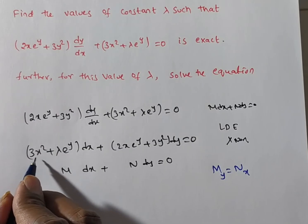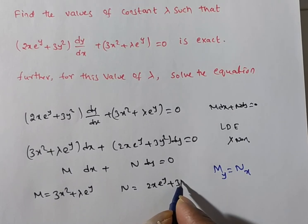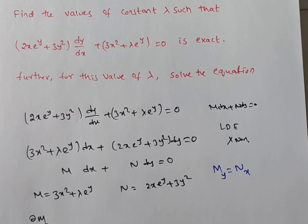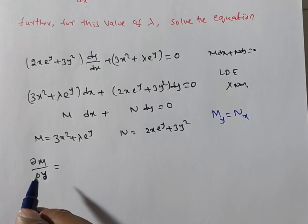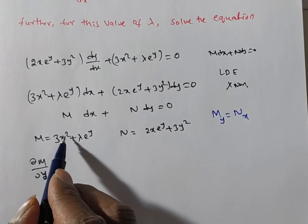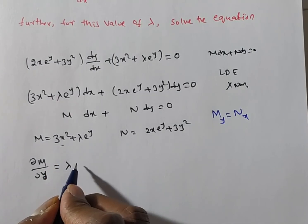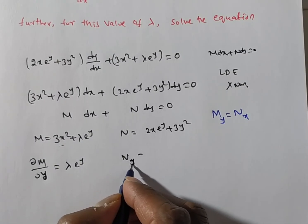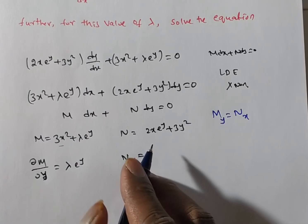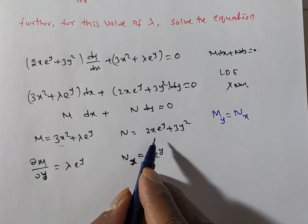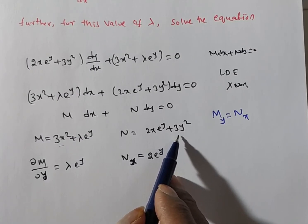Now, ∂M/∂y: M = 3x² + λ·e^y. Differentiating partially with respect to y — we treat all other variables as constants. There is no y term in 3x², so that gives 0. Lambda is a constant, and the derivative of e^y is e^y. So ∂M/∂y = λ·e^y. For ∂N/∂x: N = 2x·e^y + 3y². Differentiating with respect to x — e^y is treated as constant, and the derivative of x is 1. So ∂N/∂x = 2e^y. The term 3y² is independent of x, so its derivative is 0.